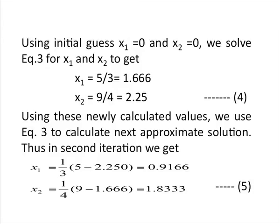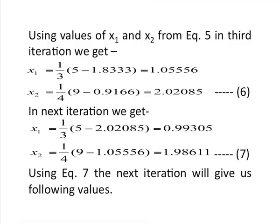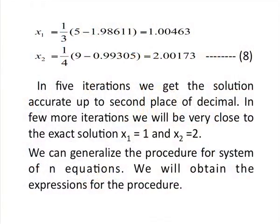The equation gives you the values 0.9166 and 1.833, so you are slowly converging to the solution. Continuing the process, in the next iteration we get the values x1 and x2 represented by equation 6. Repeating with those values gives equation 7, where we find x1 = 0.99305 and x2 = 1.98611. The actual value from Gauss elimination is 1 and 2, and we are now very close. Continuing the iterative process, the next iteration gives x1 = 1.00463 and x2 = 2.00173, which are accurate to the second decimal place. Continuing further, we will converge to the exact solution x1 = 1 and x2 = 2.